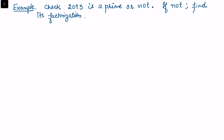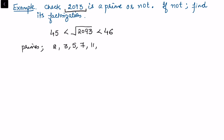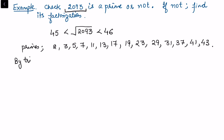Now check whether 2093 is prime, and if not find its prime factorization. Similarly, √2093 lies between 45 and 46, approximately 45.something. So we need to check all primes less than or equal to 45. These are 2, 3, 5, 7, 11, 13, 17, 19, 23, 29, 31, 37, 41, and 43. By trial: 2 doesn't divide since 2093 is odd; 3 doesn't divide since digit sum is 14; 5 doesn't divide since last digit is 3; but 7 does divide.